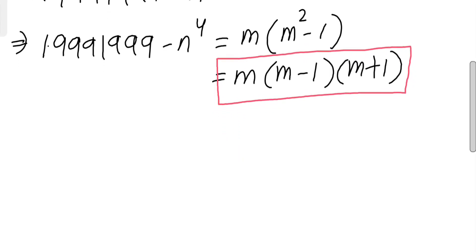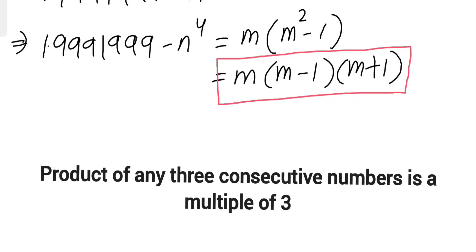As you can see here, m(m-1)(m+1) is a product of three consecutive numbers. We know that the product of any three consecutive numbers is always a multiple of three.